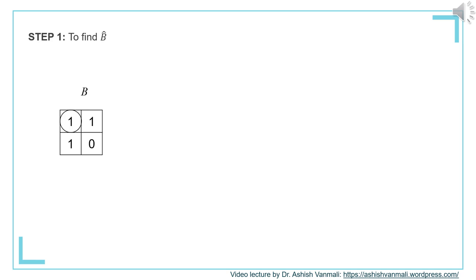Let us start with the first step: finding the reflected version of B, that is B-cap. Looking at the structuring element B, it is not an odd-size structuring element; however, the center is marked with a circle. For ease of understanding, I have drawn the X and Y axes on the structuring element where the origin coincides with the center. The vertical axis is the X axis and the horizontal axis is the Y axis. To find B-cap, we fold or reflect the structuring element B along both these axes.